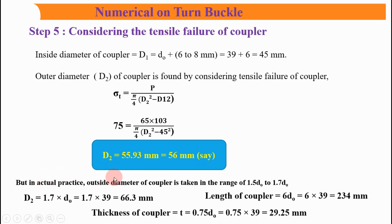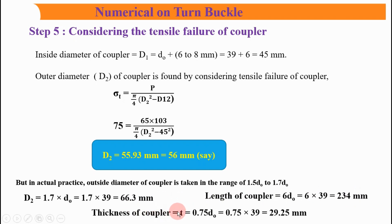In actual practice, the outside diameter of the coupler is taken in the range of 1.5 to 1.7 times d₀. So d₂ = 1.7 × 39 = 66.3 mm. The length of the coupler = 6 × d₀ = 6 × 39 = 234 mm. The thickness of the coupler t = 0.75 × d₀ = 0.75 × 39 = 29.25 mm. In this way we have successfully designed the turnbuckle. I hope this content is helpful for understanding the concept.